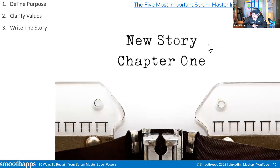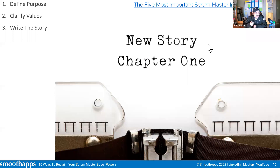Step three: write your story. One thing I learned in CTI was the idea of self-authority. Many of us have given up the pen that writes the story of our life to other people. Who is writing the story of your life as a Scrum Master when you're experiencing a loss of power? Is it your boss? The loudest voice in your scrum team? Your product owner? A stakeholder or executive who is treating you poorly? Take the pen back. Take authorship of the story of your life.